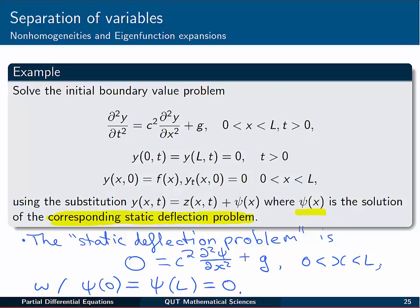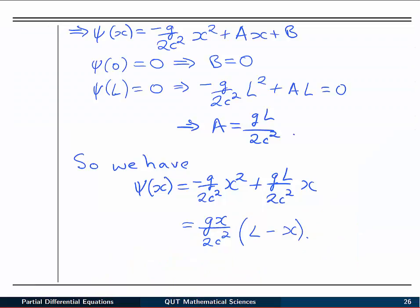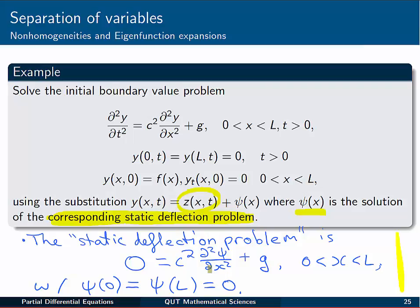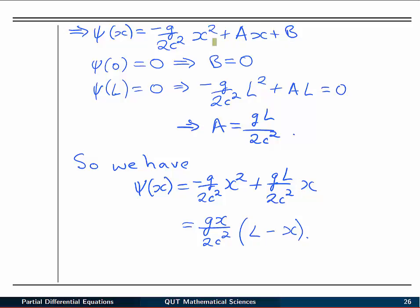So in this case, that static deflection problem is just the equation up here with zero for the time derivatives. So we've got 0 = c²d²ψ/dx² + g on 0 to L. And if y is zero at 0 and L, then so too will ψ(x). ψ(0) and ψ(L) will also be zero. So we've got this ODE problem to solve, first of all, for ψ. That ODE can be fairly easily solved just by rearranging and then integrating a couple of times with respect to x. Using the two boundary conditions, we can get B=0 and a constant for A. And we get our static deflection: ψ(x) = gx/(2c²) times (L - x).